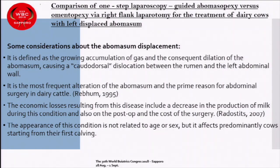Making some considerations about displacement of the abomasum, we can say it is defined as a growing accumulation of gas and the consequential dilation of the abomasum, causing a caudal-dorsal dislocation between the rumen and the left abdominal wall. It is the most frequent alteration of the abomasum and the prime reason for abdominal surgery in dairy cattle. Economic losses from this disease include decreased milk production and post-operative and surgical costs.